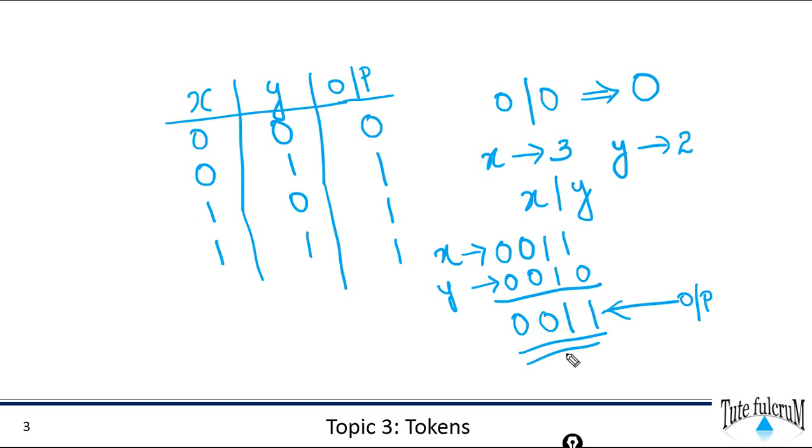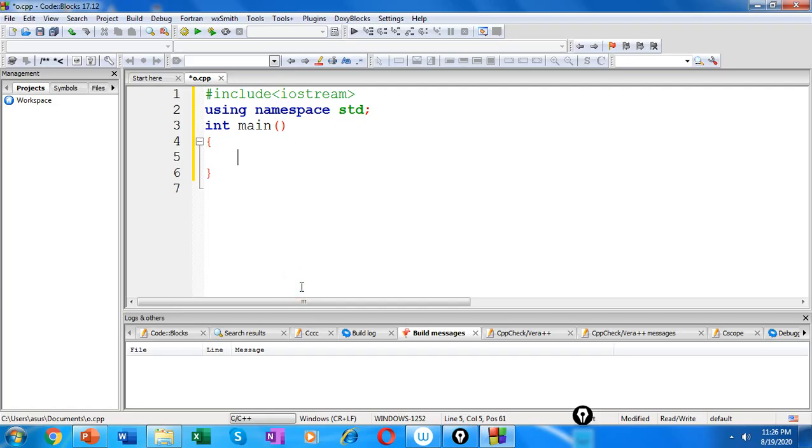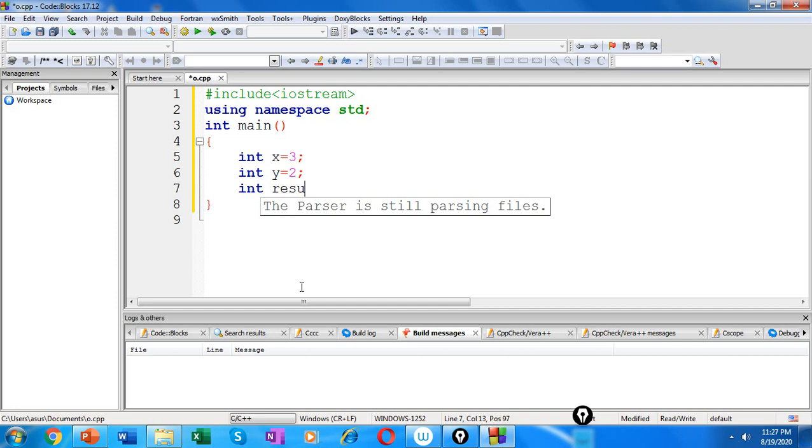Let's write a code and verify this. So let's take two operands x and y. So let x be 3 and let y be 2. Now let's use a variable result to hold the result of operation. So here we are doing the operation of bitwise OR. So x OR y.